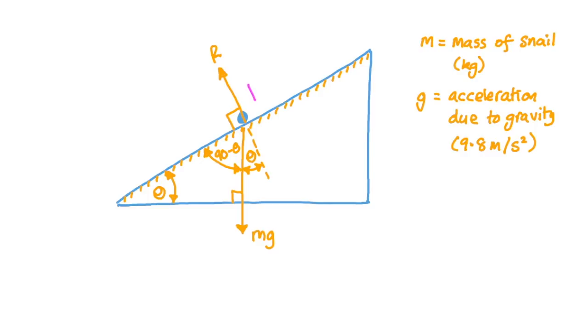Now, because the snail isn't leaping off of the slope, and it's not crashing down through the slope, it means that this force, R, must be exactly balancing the component of the weight force which is acting in this direction. And that will be m times g times the cosine of the angle between that force and this direction. So the reaction force, R, is equal to mg times cos theta.